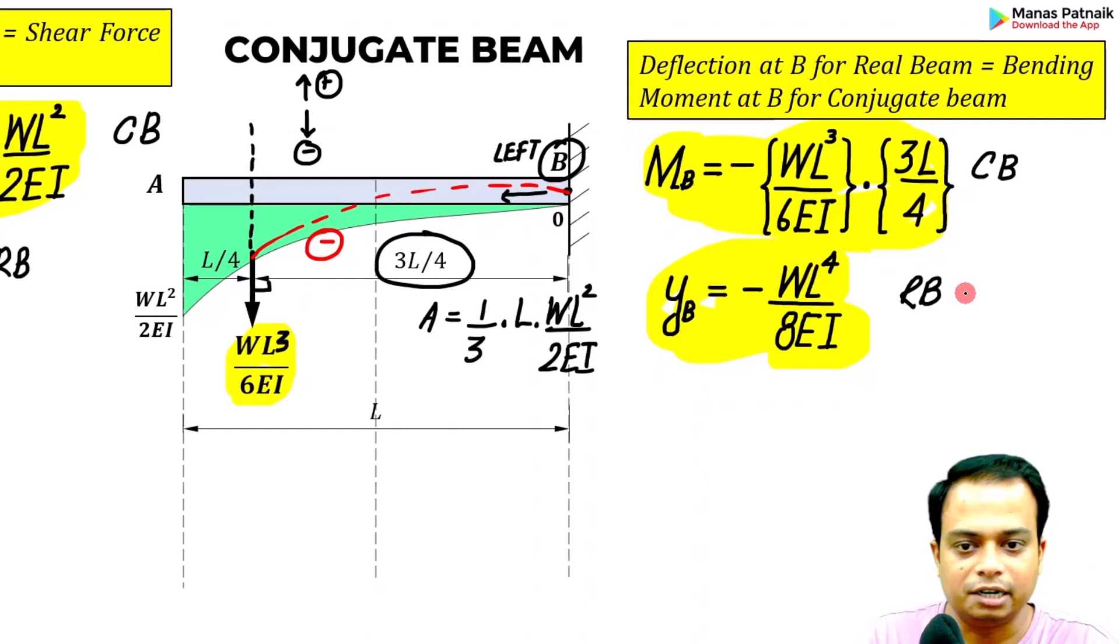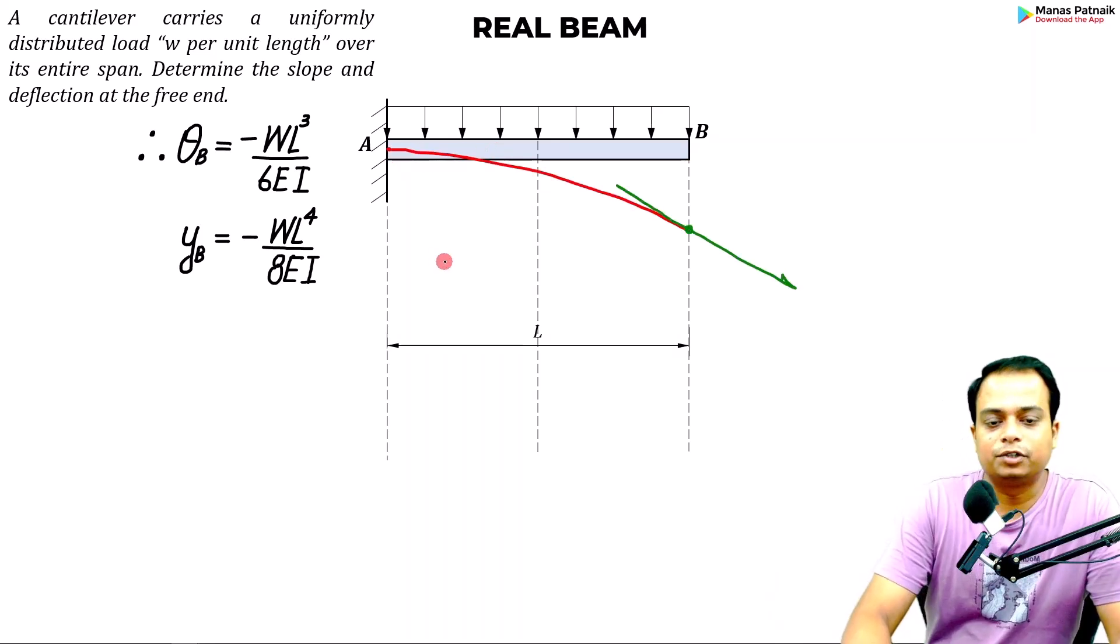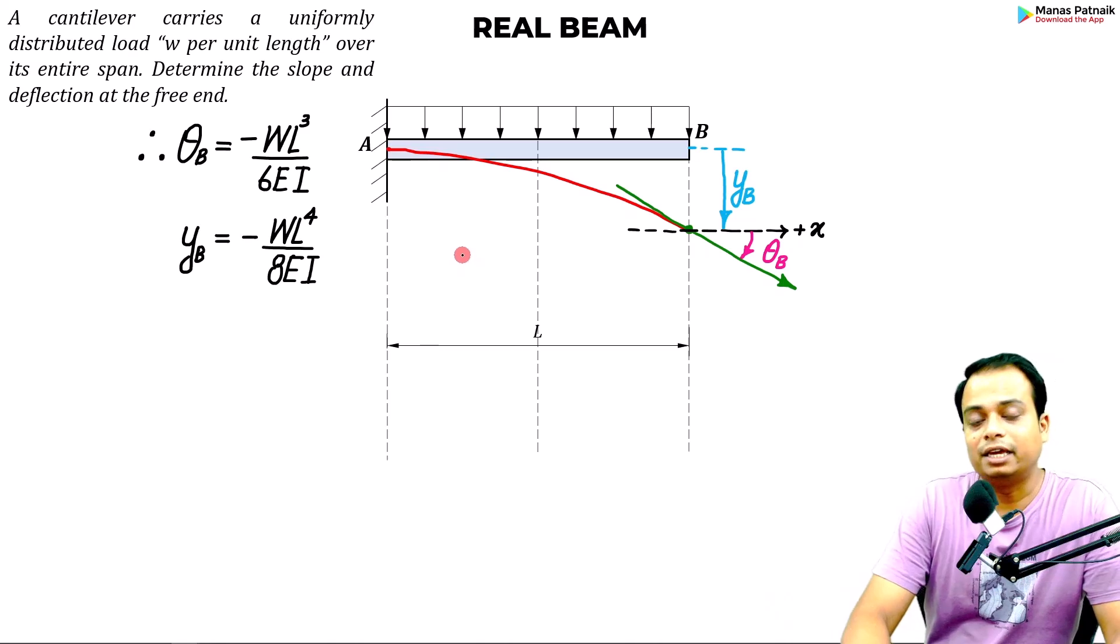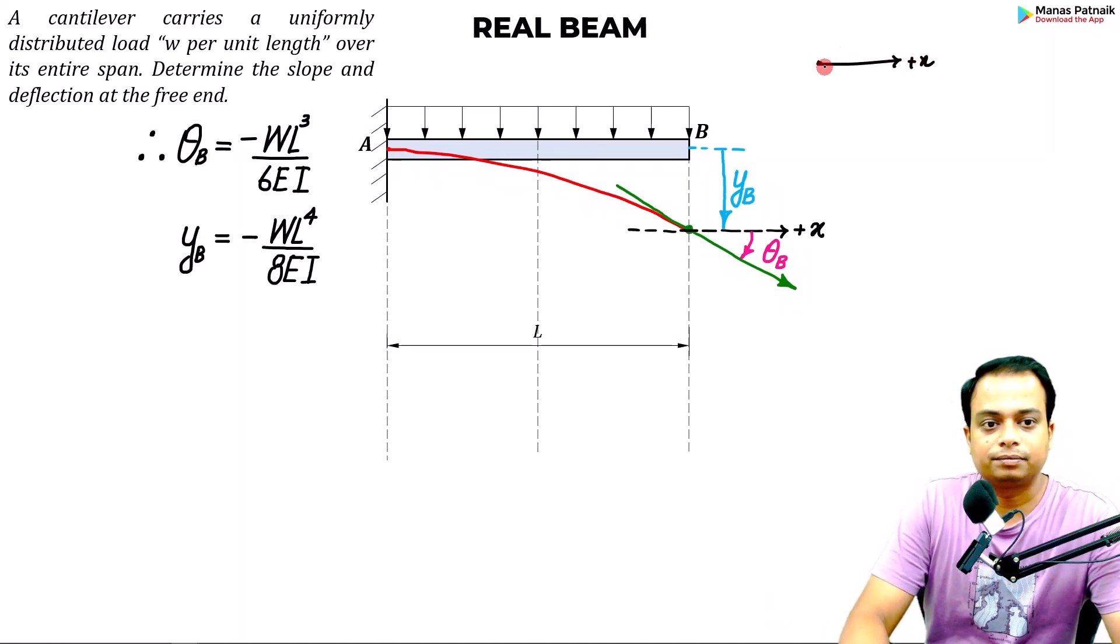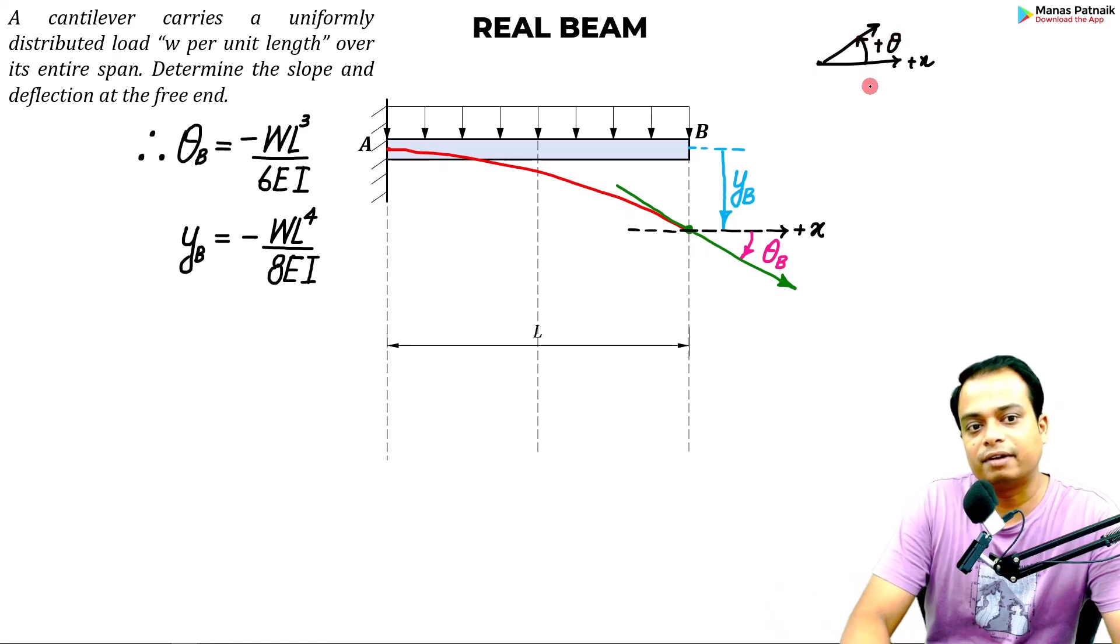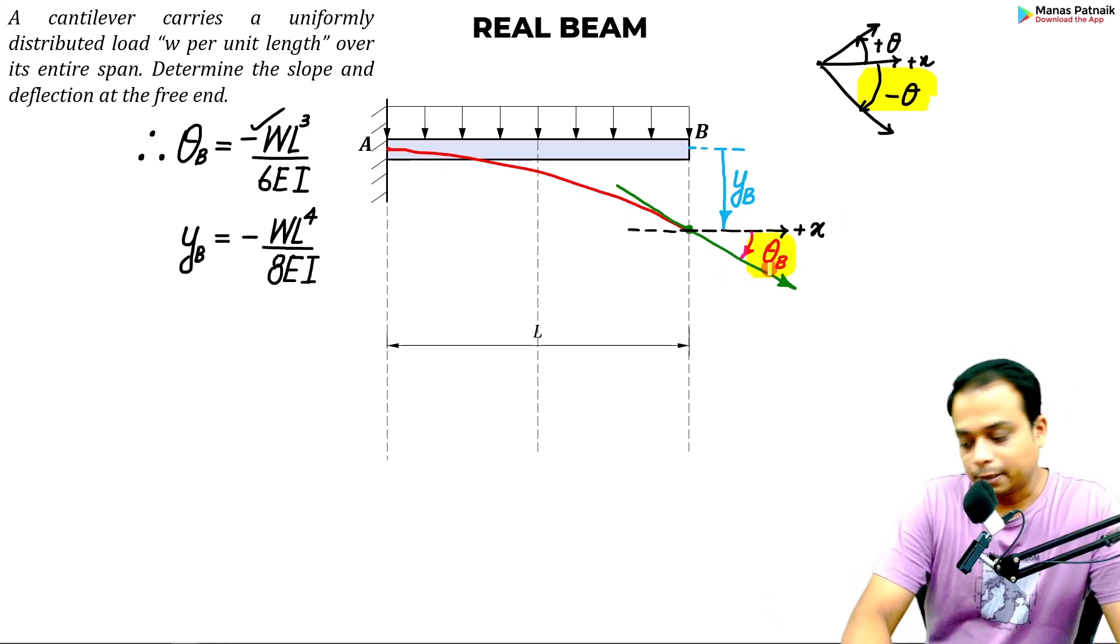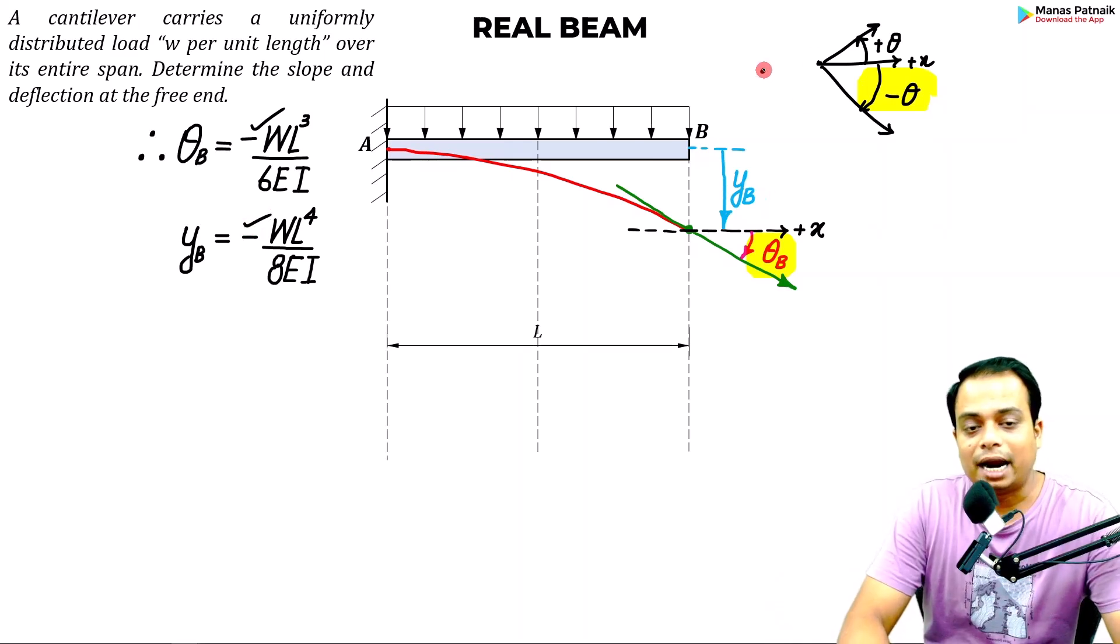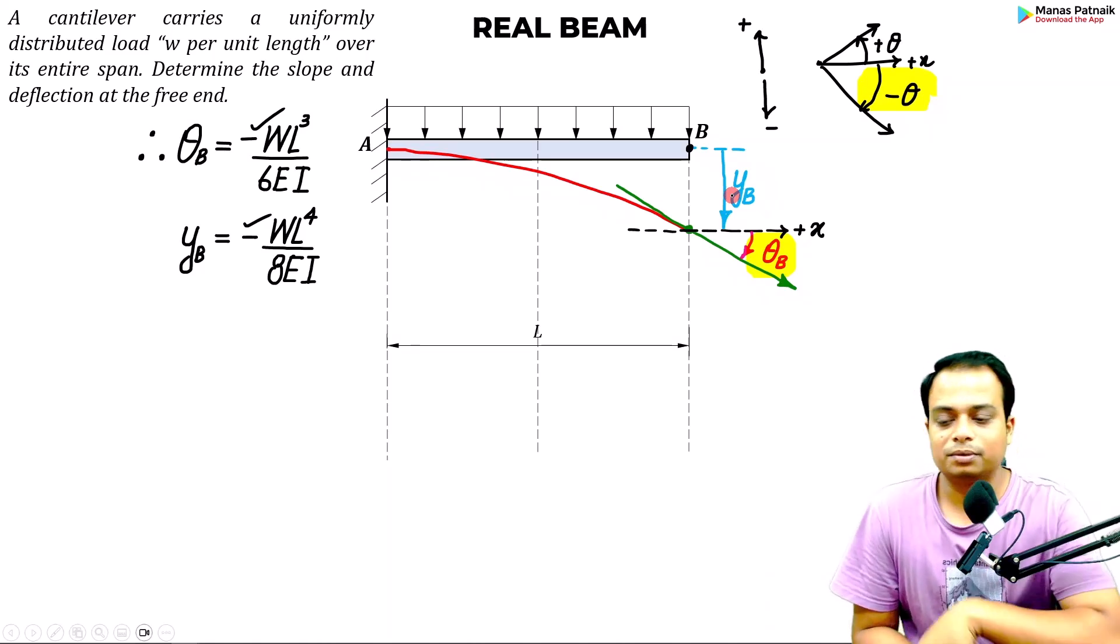These are the calculations. Let me show you the real beam again with these final results. If you make an elastic curve which shows the deflection, this is what they would convey. This negative value of slope indicates: positive x, if you measure the angle in this direction, that is a positive angle. However, if you measure the angle in this direction, that is a negative angle. So negative angle signifies the angle has to be measured clockwise, which is clearly visible here. The value of deflection that we obtained is negative, so the deflection is in the downward direction.